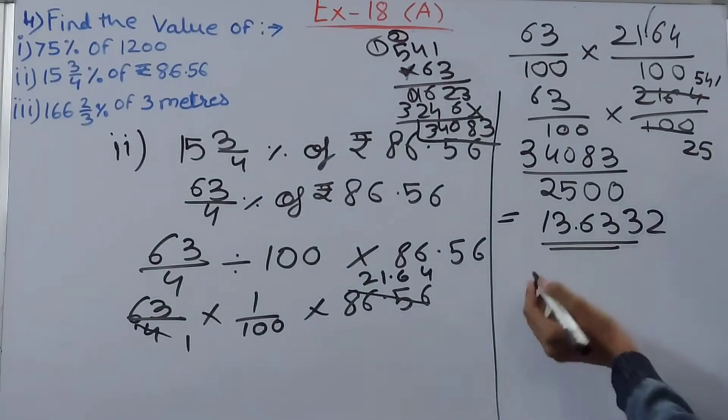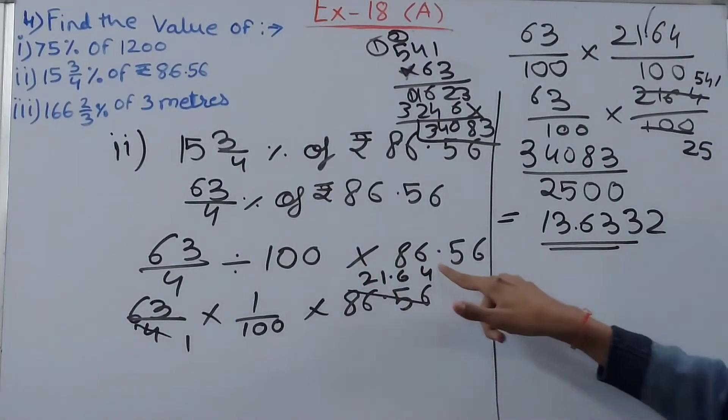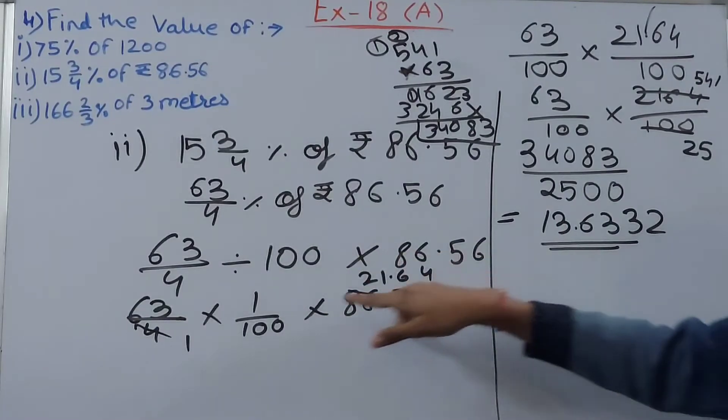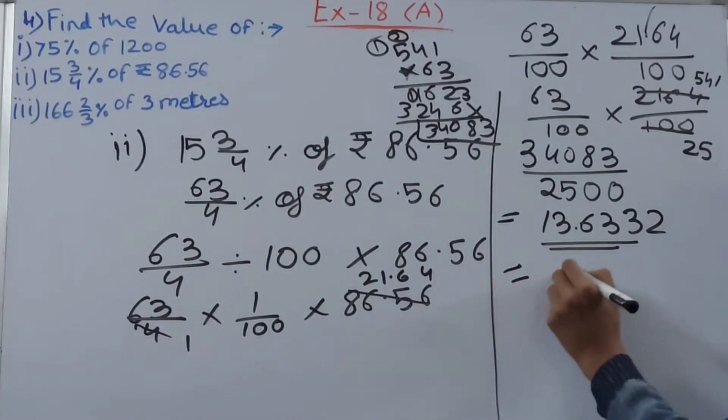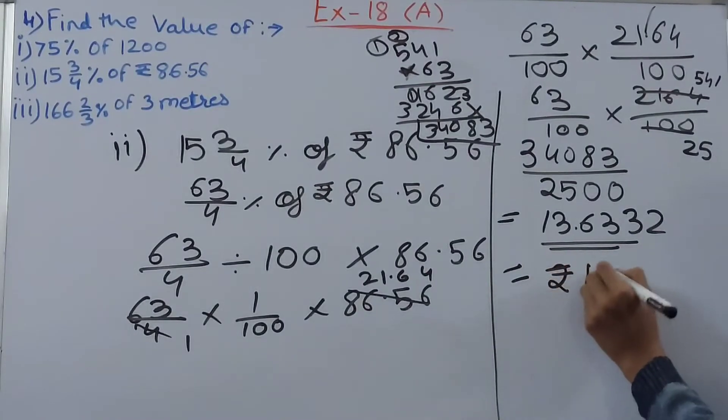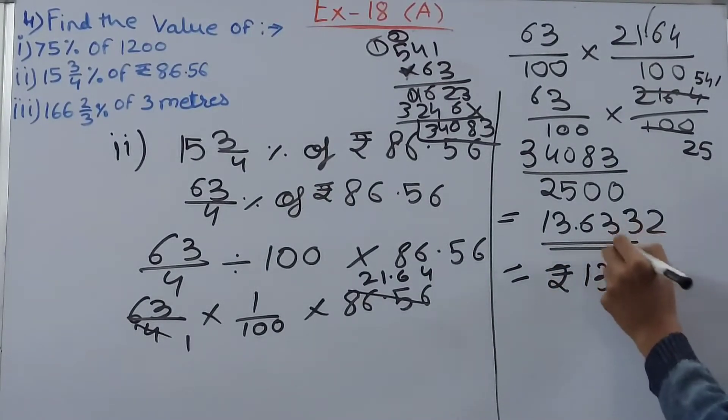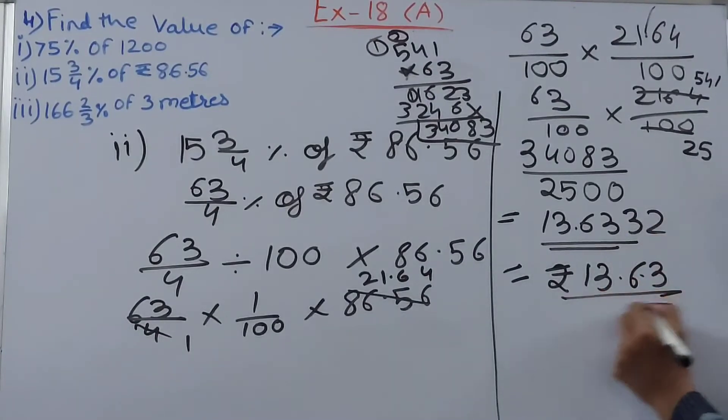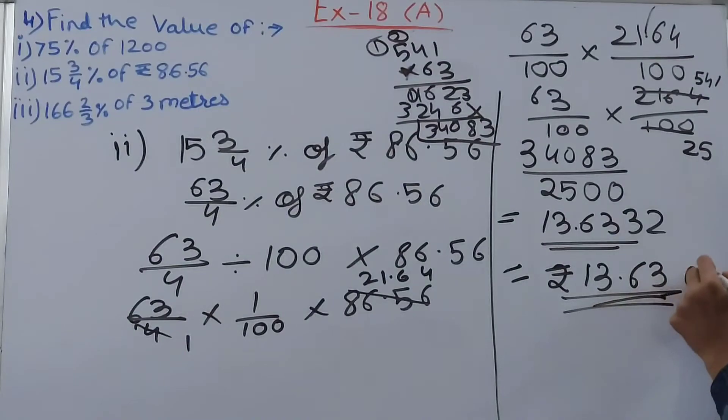This will be in rupees only because we have not multiplied it by 100. This answer will still be in rupees. We get rupees 13.63. You can just omit the other two digits. So this becomes our answer.